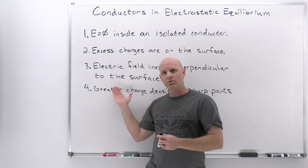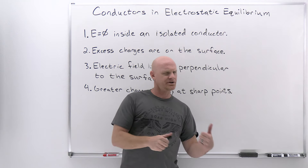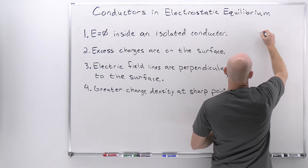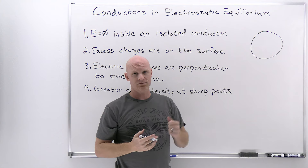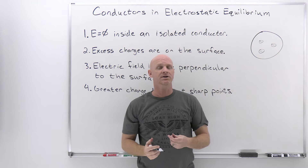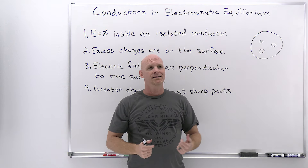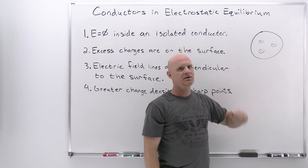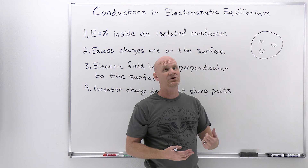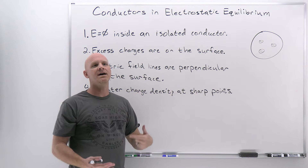Now we're going to go back through and explain why each of these four rules is true. We're not really going to prove they're true — we're going to explain why they cannot not be true. For rule one, consider a solid conducting sphere with an excess negative charge. If it's reached electrostatic equilibrium, none of these charges are going to move anymore. But if there's an electric field anywhere inside, those electrons would want to move. So to be in electrostatic equilibrium, there can't be an electric field anywhere inside it — otherwise some of those mobile charges would be moving.